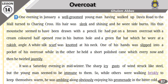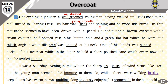Page number 87 of your textbooks — Overcoat, first paragraph, is important from the translation point of view. 'One evening in January, a well-groomed (khush libas, khush posh) young man, having walked up Davis Road to the Mall, turned to Charing Cross.' His hair was sleek — sleek means glossy, smooth and shining. His thin mustache seemed to have been drawn with a pencil.